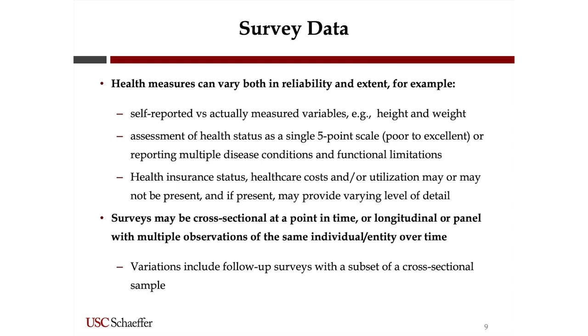The data might be collected for a particular project or for more general use by a community of researchers, or as a nationally representative sample. General use studies usually include a range of measures like demographics, socioeconomic status, employment, and health. The health measures can vary in both reliability and extent. For instance, it'll usually be self-report for health conditions rather than actually measured — like height and weight — and there are known biases in the way people self-report.